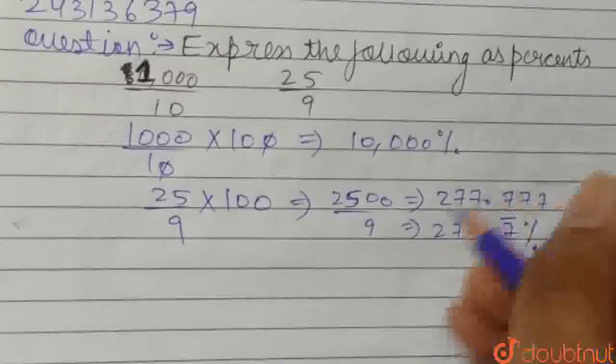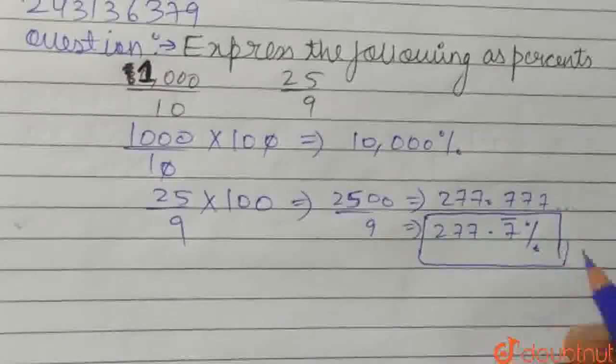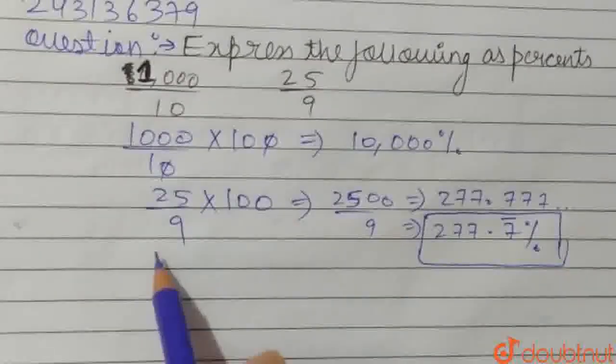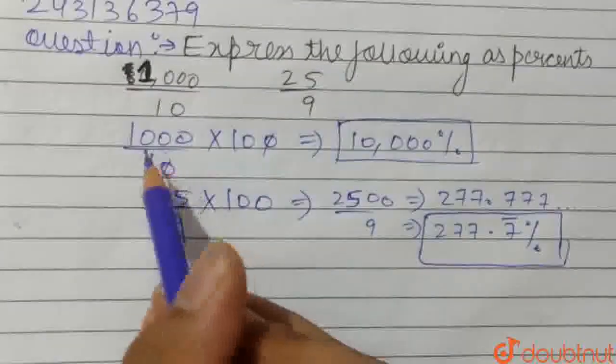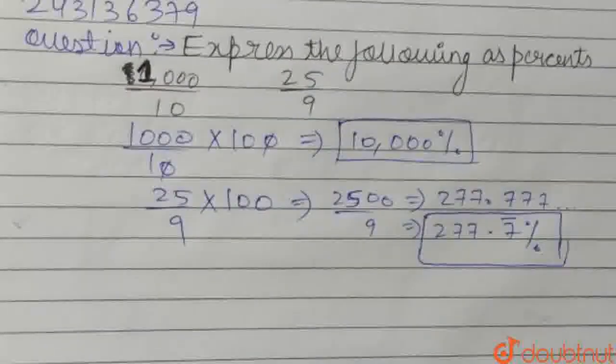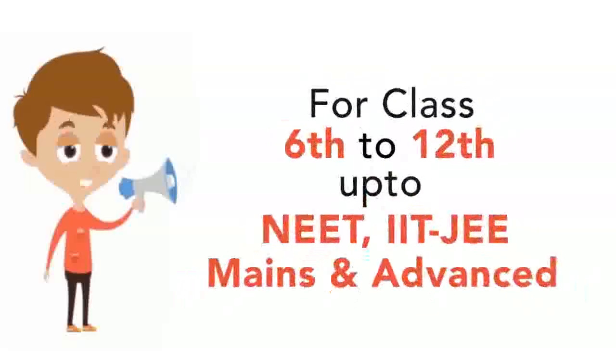So this is the percentage form of this fraction, 25 upon 9. And this is the percentage form of 1000 upon 10. So these are the two answers. Okay, thank you friends, thank you.